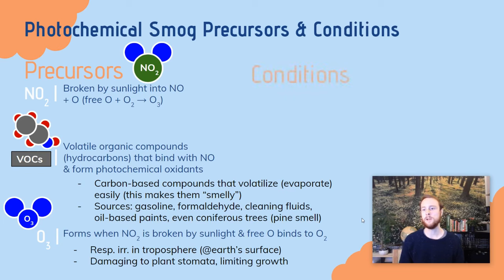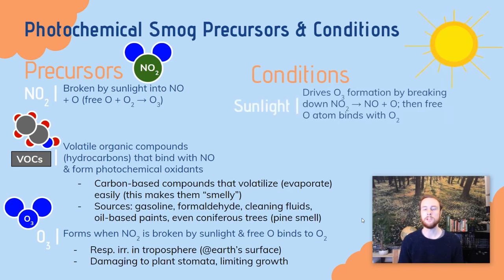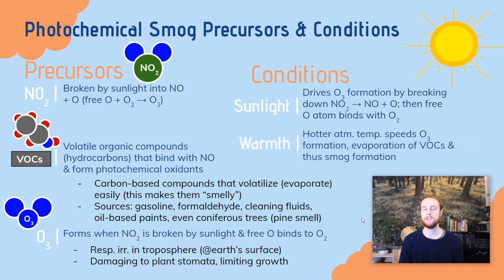Now we'll take a look at the environmental conditions required for smog formation. Sunlight is needed to break down nitrogen dioxide, so that's a huge component — it drives ozone production by breaking down NO₂. Then we have warmth. The warmer it is, the faster these reactions that create photochemical smog are going to occur. Also, the warmer it is, the faster volatile organic compounds are going to evaporate, which speeds up the production of photochemical smog.